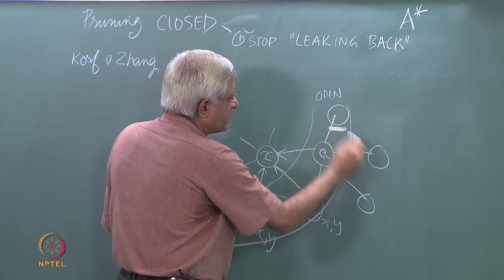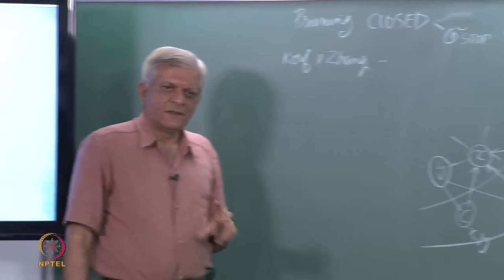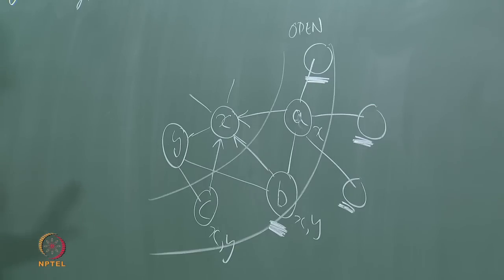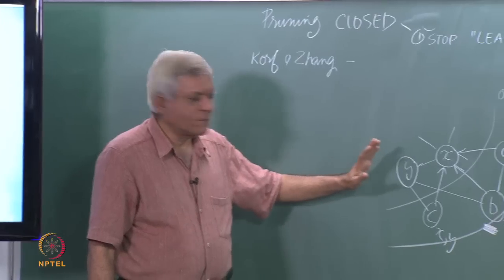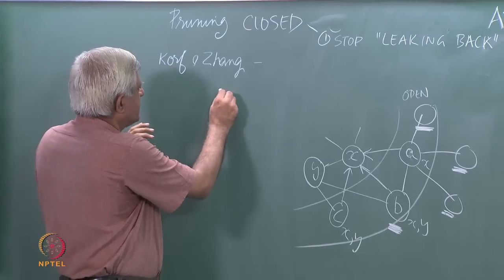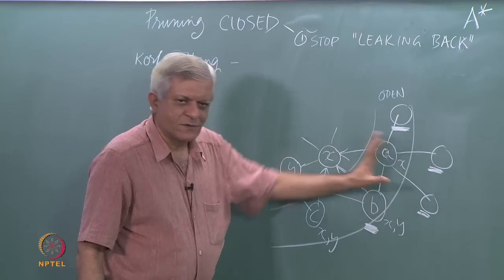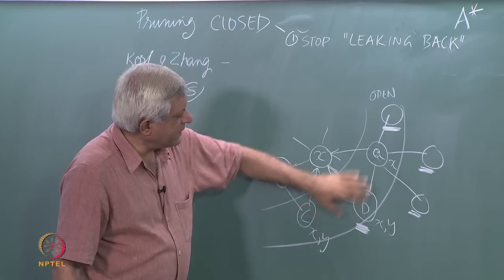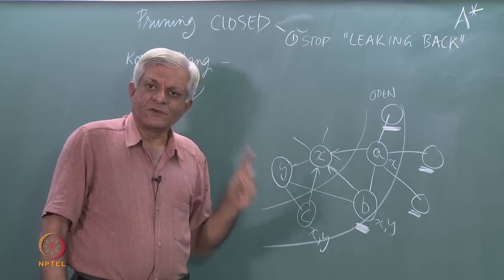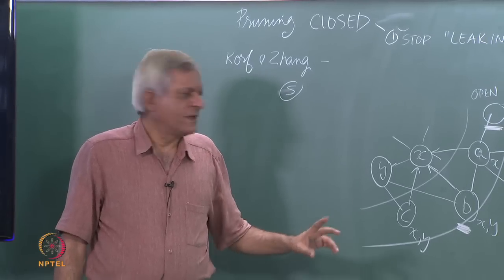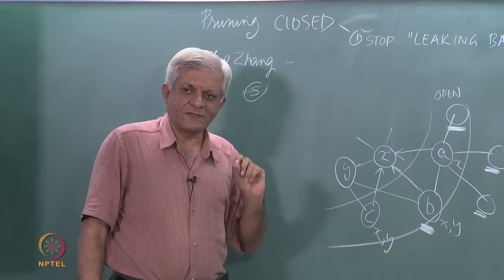This is one mechanism for stopping the search from leaking back. When we generate children of A, only forward-looking children are produced. When B is generated next, A will not be regenerated, but other children of B will be, and the search only pushes forward. The task of avoiding loops is handled by augmenting open list nodes with extra information about which nodes should not be generated.